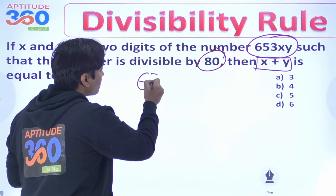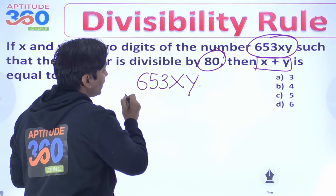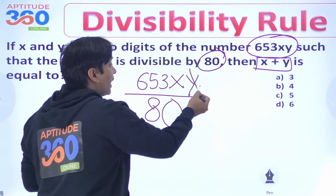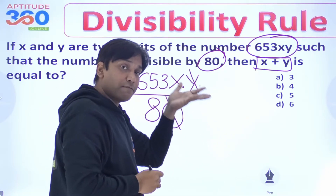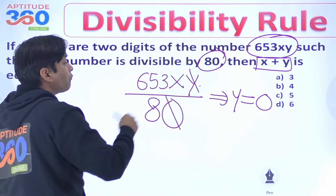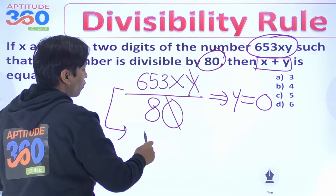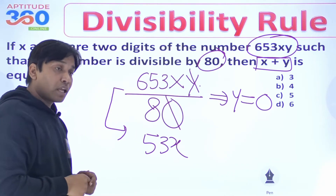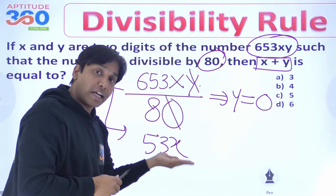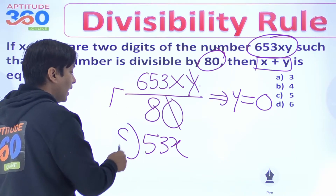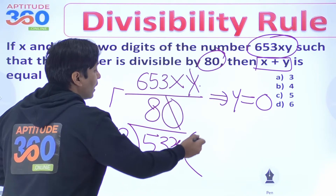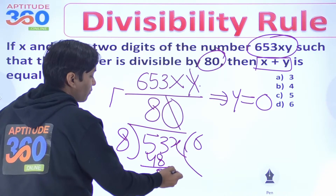There are two things to focus on. If 653XY is divisible by 80, one thing which is necessarily clear is that the number must end in zero at the units place. Hence Y will necessarily be zero. And if Y becomes zero, at the last three places we have 5, 3, and X. Now 53X must be divisible by 8. 8 into 6 is 48, so we are left with 5X.